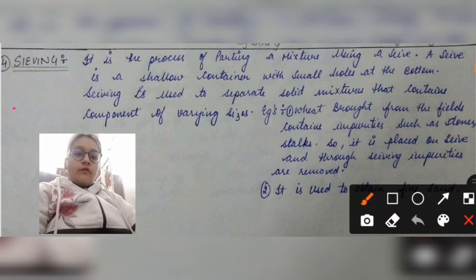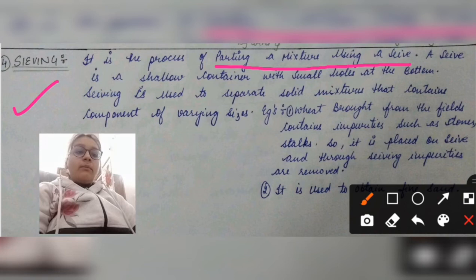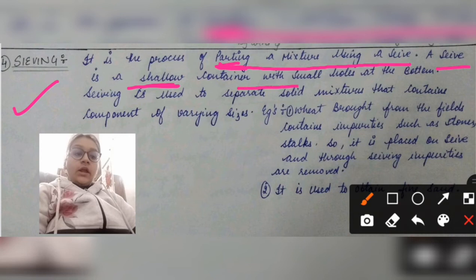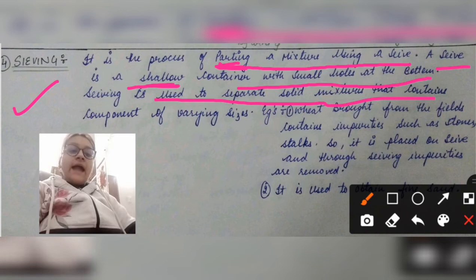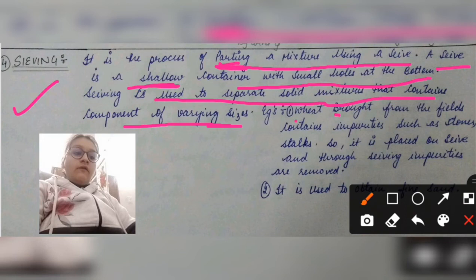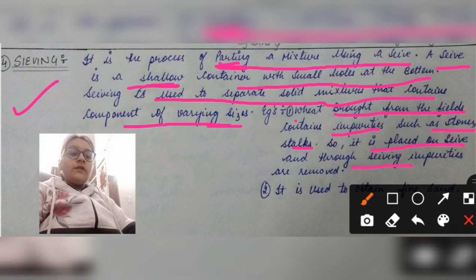The fourth technique is sieving. It is the process of separating a mixture using a sieve. A sieve is a shallow container with small holes at the bottom, used to separate solid mixtures that contain components of varying sizes. For example, wheat brought from the fields contains impurities such as stones and stalks — it is placed on a sieve and the impurities are removed. Sieving is also used to obtain fine sand.